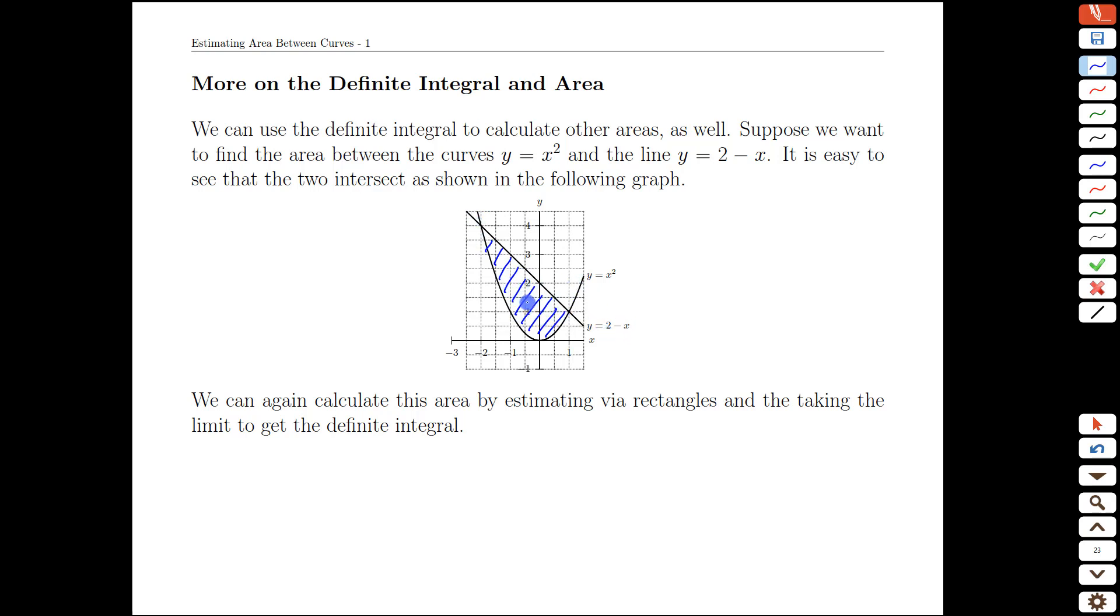The area is clearly well defined and it seems something similar to what we've done before but it is a bit different. Previously we've studied intervals from a to b and we've looked at the area between the x-axis and a graph, we haven't looked specifically at the area between two graphs.